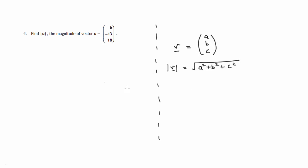So that's the result we're going to use. In this case, the magnitude of vector u will be the square root of 6 squared plus negative 13 squared plus 18 squared.